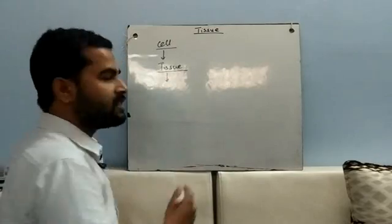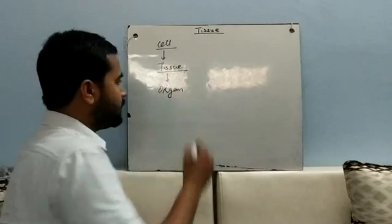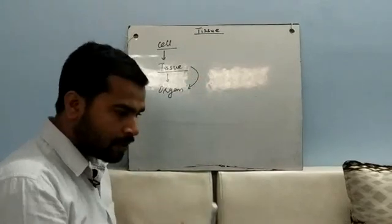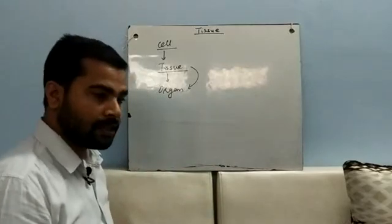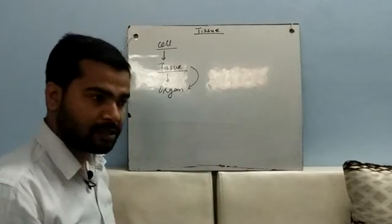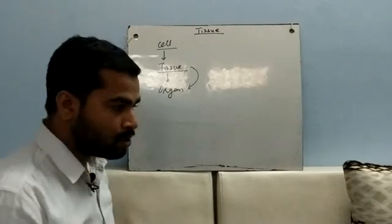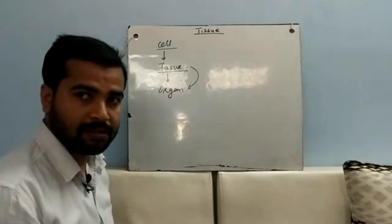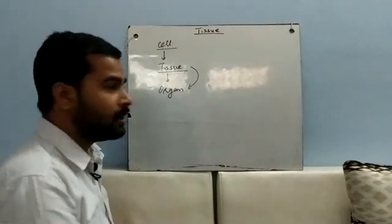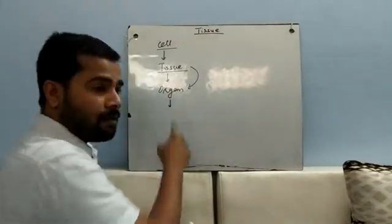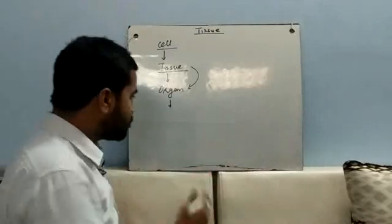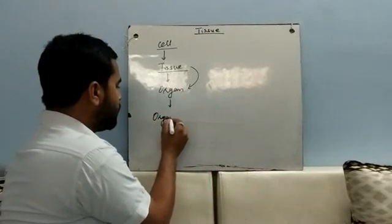If we move from tissue level to the next step, that will be organ level of body organization — where many tissues combine or conjugate together to form an organ. For example, in humans the heart is made up of cardiac tissue, also called cardiac muscle. That conjugated cardiac tissue combines to give rise to the heart — an organ level of body organization. Then from organ level, more than one organ together form the organ system level of body organization.